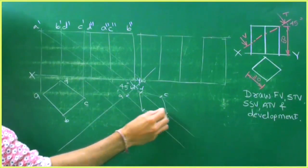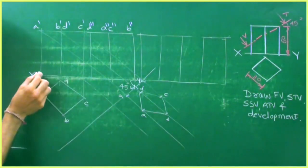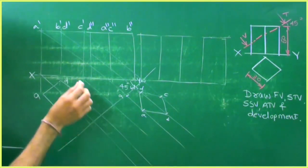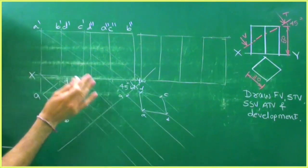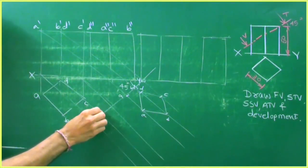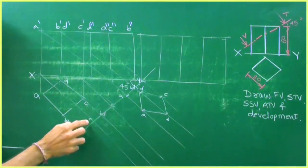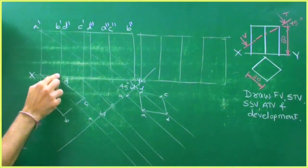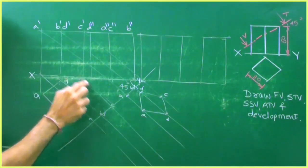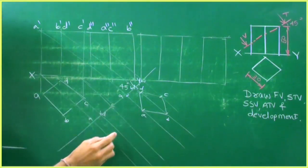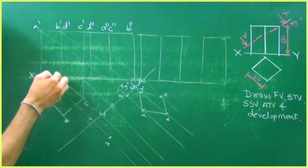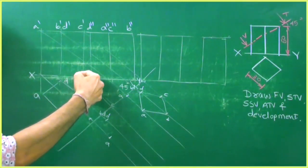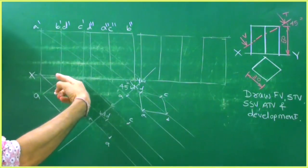When you join, you'll get A, B, C, D. The same thing applies to the bottom as well. Project at 45 degrees. Take XY to A — again labeling A, B, D, C at the bottom. Take XY to A and cut it, XY to D and cut, XY to C and cut, XY to B and cut.